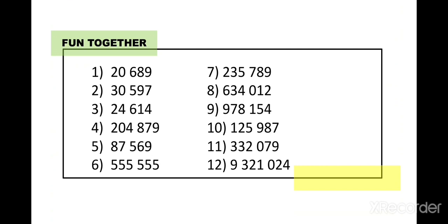Now I will read number 1: 20,689. Say it with me — 20,689. Very good. Number 2: 30,597. Say it with me — 30,597. Very good. Now I want you to pause this video on the count of 3 and you will be reading from number 3 to number 12. In 3, 2, 1 — pause this video.